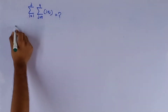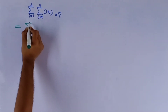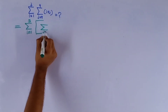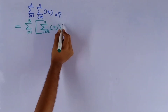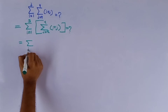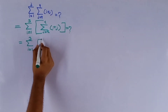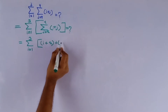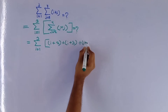This question is: summation of i equals 1 to 3 of summation of j equals 2 to 4 of (i plus j), equals how much? Summation of i equals 1 to 3 of summation of j equals 2 to 4 of (i plus j) equals summation of i equals 1 to 3 of (i plus 2) plus (i plus 3) plus (i plus 4).